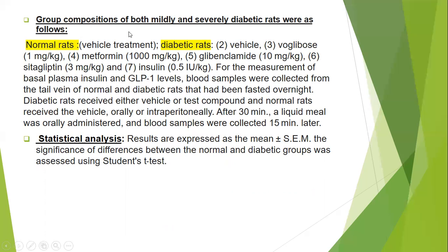Two groups are discussed: normal rats in which only vehicle is administered, and diabetic rats in which vehicle, voglibose, metformin, glibenclamide, insulin, and teneligliptin are administered in specified amounts. After 30 minutes, a liquid meal was orally administered and blood samples were collected after 15 minutes.